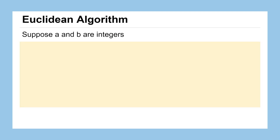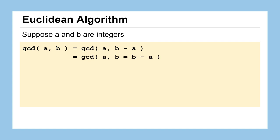Let's see how we can apply this Euclidean algorithm in a more general sense, which will help us think about how to program it in Python. Instead of choosing specific values for a and b, we keep them general as integers. Our goal is to find the greatest common divisor of a and b, which we now know equals the greatest common divisor of a and b minus a.